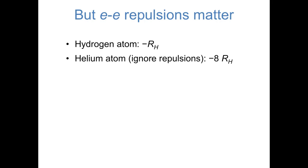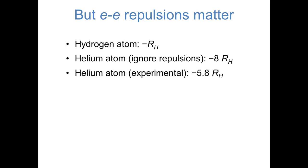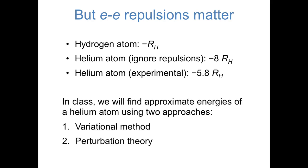Of course, we made a big approximation here in ignoring electron-electron repulsions. I'd like you to think for a few seconds about which direction you think we made this error in — do you think the true experimental energy of a helium atom is more negative or less negative than negative 8 times the Rydberg constant? The term that we ignored, the electron-electron repulsion, is destabilizing — it's positive. So the true energy of a helium atom turns out to be less negative than the energy we approximated: it's about negative 5.8 times the Rydberg constant. This first approximation was pretty rough. There do exist more precise methods, including the variational method and perturbation theory, that allow us to make better approximations of multi-electron atoms. We'll be going through the math of those methods in class.